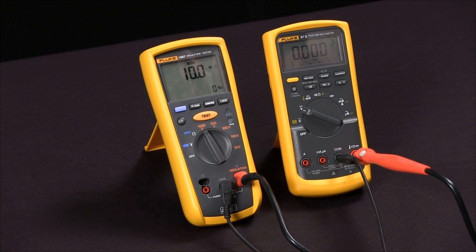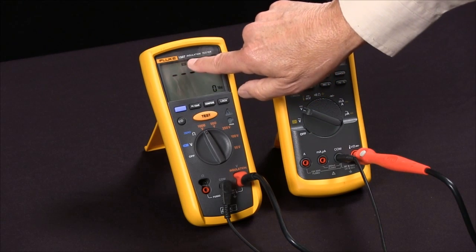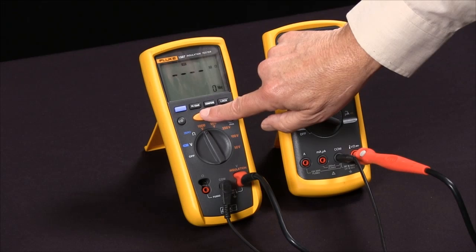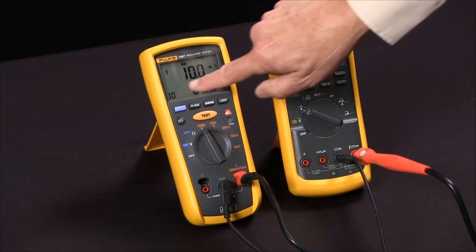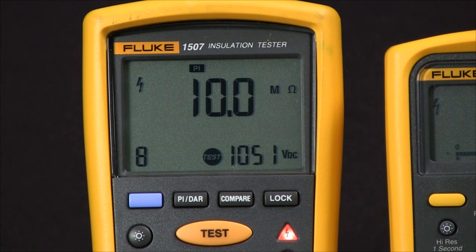Polarization index is done the same way. I select polarization index PI and 1,000 volts, and I push the test button. It begins a 10 minute test, so you see 10 minutes, and that will count down. At the end result, it will show the ratio.